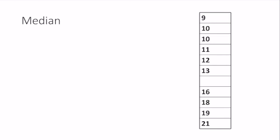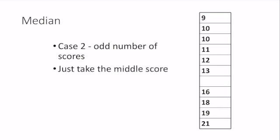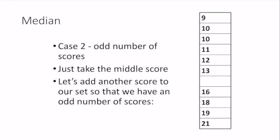What if I had an odd data set? Let's say I took out one of the numbers here. I would just take the middle score. We're going to add another score to our data set. Now we have an odd number of scores. Now I have a sample size of 11. I take my middle score, which is one, two, three, four, five, six. Now we have a median of 13.